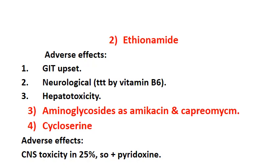The fourth second-line drug is cycloserine, which is specific for TB but has marked and common CNS toxicity in up to 25% of patients. As with many other anti-tuberculous drugs, CNS toxicity may be decreased or minimized by co-administration of pyridoxine.